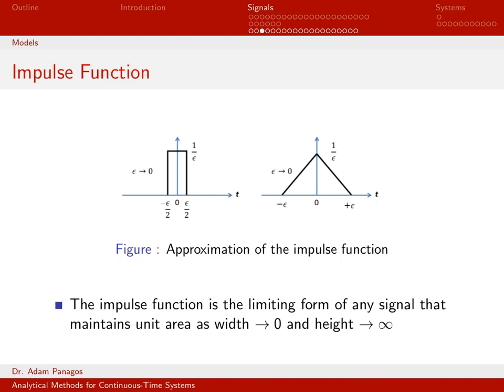This picture over here on the right shows another example. This rectangle has a height of one over epsilon, and its total width is two epsilon, from minus epsilon to epsilon. If we compute the area of this rectangle — area equals one half base times height — base is two epsilon, height is one over epsilon, so two epsilon over epsilon is two, and one half times two is one. So this rectangle also has an area of one for all values of epsilon. In the limit, as epsilon gets small, this signal gets very large in amplitude and very narrow in width, so its height goes to infinity and its width goes to zero. It would also be fair to think of the impulse function as being the limiting form of this signal as well.